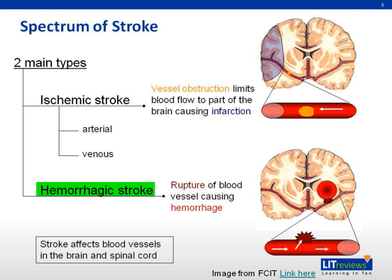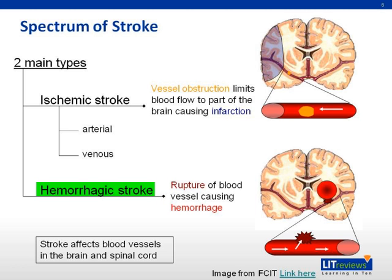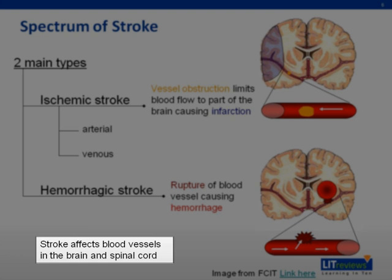Hemorrhagic stroke, or cerebral hemorrhage, accounts for about 10% to 15% of all strokes. This is caused by a rupture of a blood vessel. These may be related to hypertension, aneurysm, or arterial venous malformation. Hemorrhage may be inside the brain parenchyma — that is, intracerebral — or outside the brain parenchyma, such as a subarachnoid hemorrhage. Both ischemic and hemorrhagic strokes can occur in the brain or in the spinal cord.